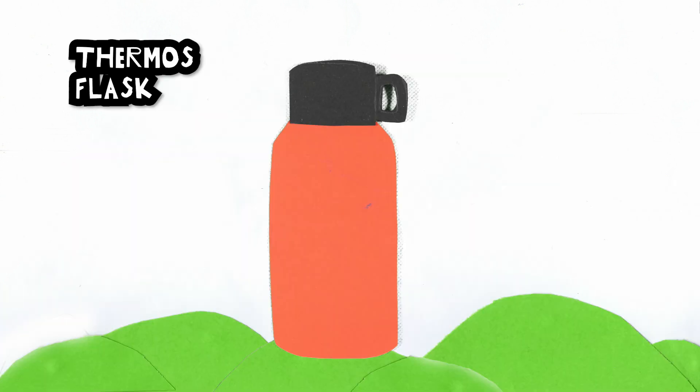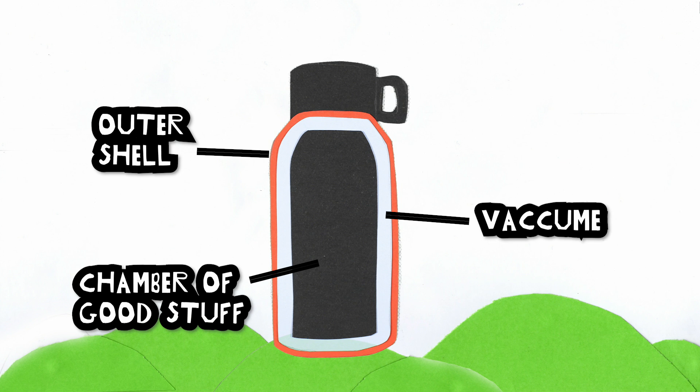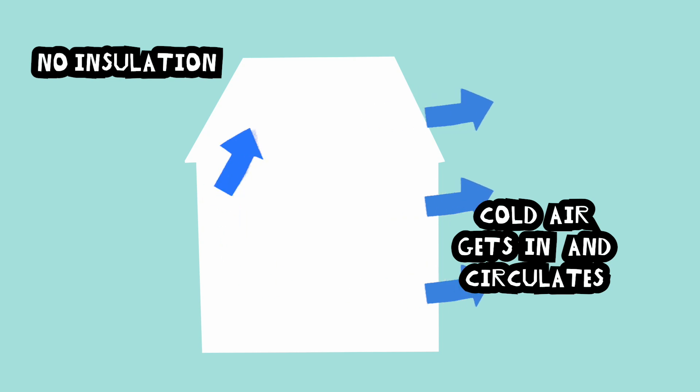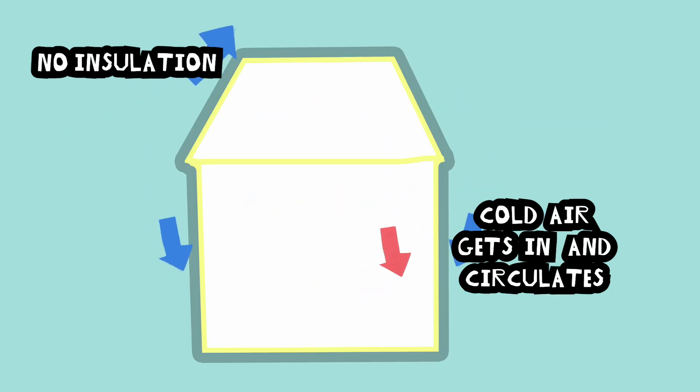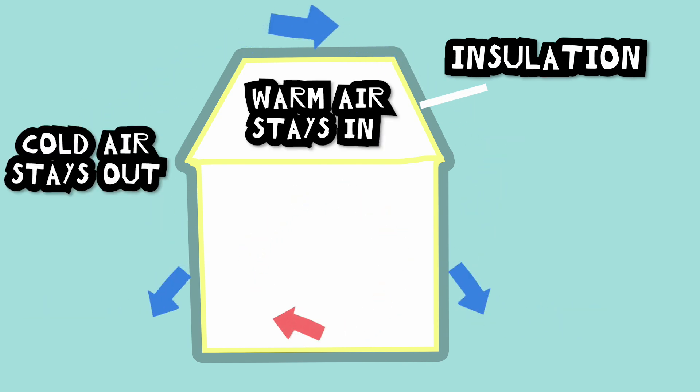We can cover our houses in a material that acts like a thermos flask, preventing all heat from escaping in the winter and preventing cold air getting in. Well insulated and airtight walls mean warm air is trapped inside the building, which means less energy is needed to run radiators.